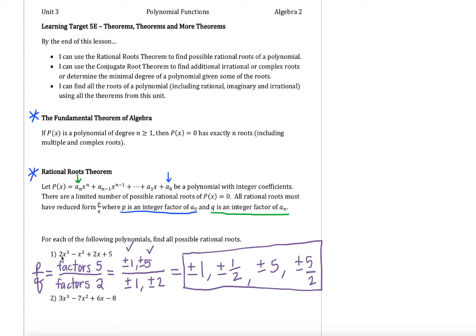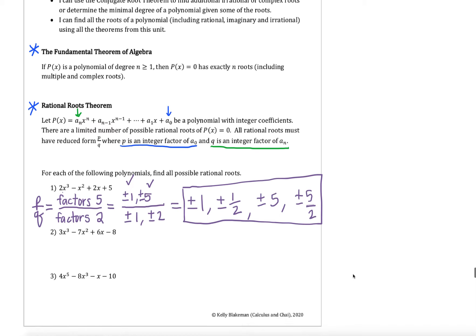I have 8 total possible rational roots because of the plus or minuses. Our degree in example one is 3, so this polynomial has only three roots. This list of 8 is just the possible rational roots — not all of them will actually be roots. We'll look at examples where we take this list and use synthetic division to find one that works. Let's continue practicing finding this list.